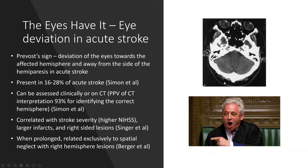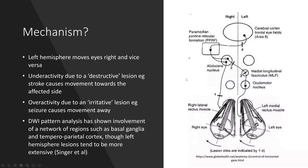The mechanism behind horizontal gaze begins in the frontal eye field, as shown in the diagram on the left, descending into the pons via the PPRF and into the sixth nerve nucleus, which communicates with the third nerve nucleus on the other side through the MLF. This produces contralateral gaze — the left hemisphere pushes the eyes to the right, and the right hemisphere pushes the eyes to the left.